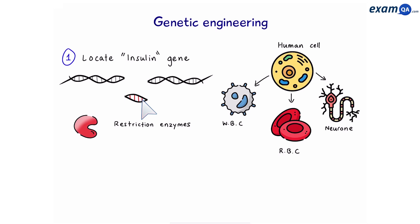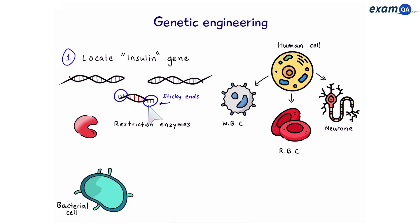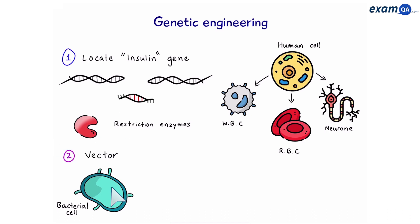Because we used restriction enzymes, we also get these parts at the end called sticky ends — you could think of them like the tips of a jigsaw puzzle. They're going to be useful later on. This gene needs to go into a bacteria, but we can't just throw it in — we need a vector. A vector is something that's going to carry the gene into the bacteria. A bacteria has normal chromosomal DNA, but also has these circles called plasmids, and it's the plasmid that's going to act as a vector.